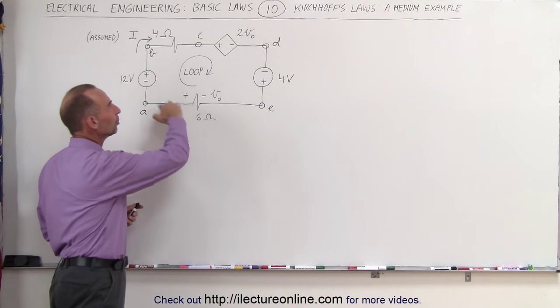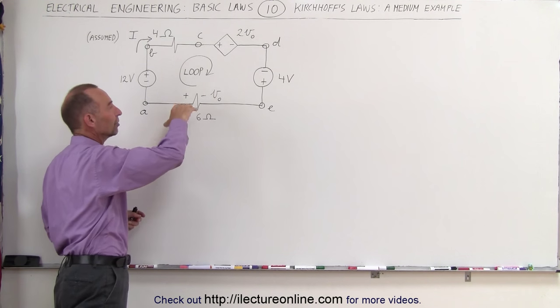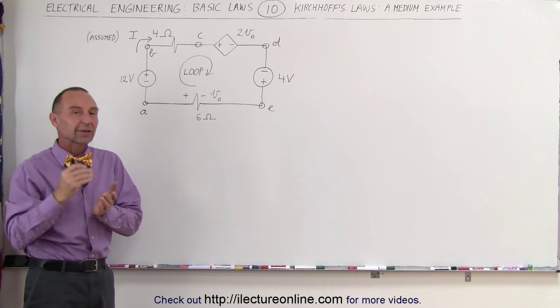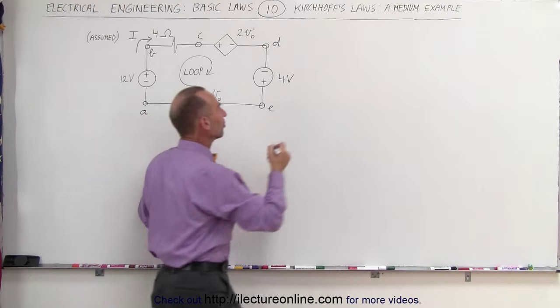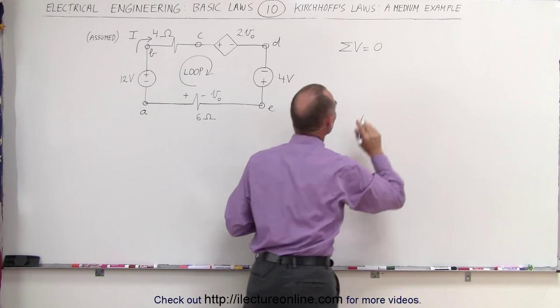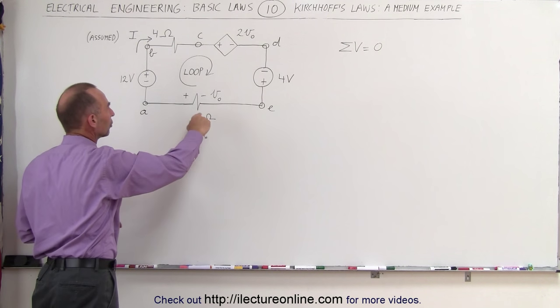It is still a single loop example and what we're going to do here is travel around the loop in a clockwise direction, add up all the voltages. Using Kirchhoff's Laws we know that they should add up to zero. We know that the sum of all the voltages around any loop in the circuit must always add up to zero. Let's start at A and go around the circuit.